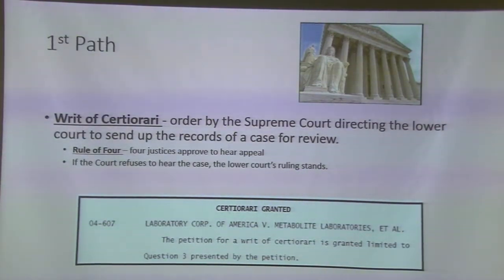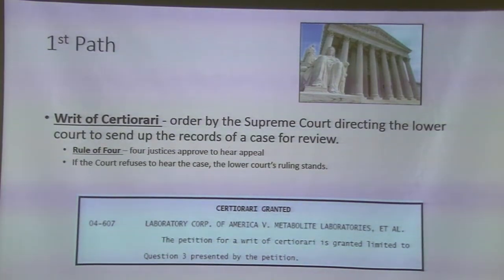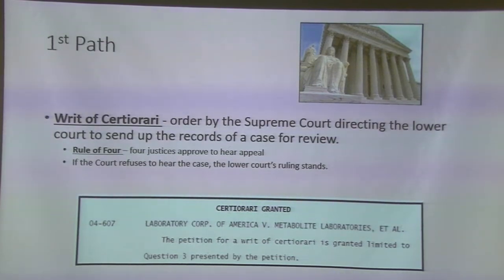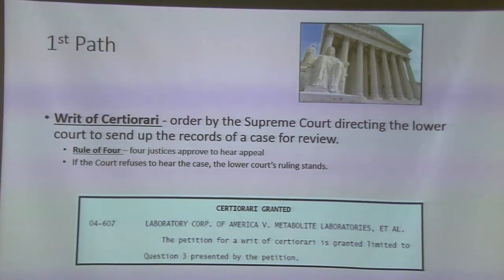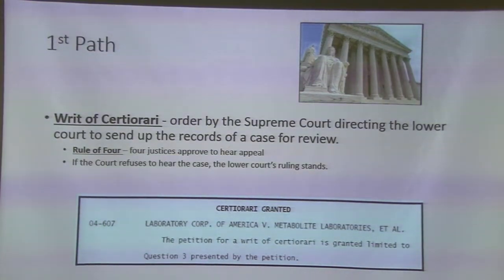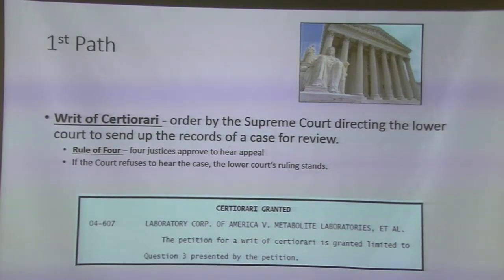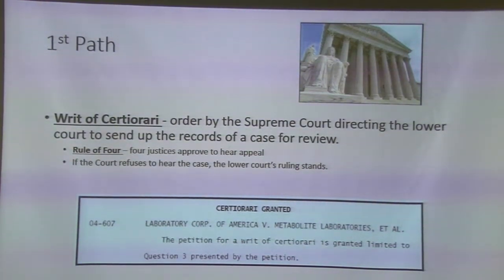For example, if it's a gun rights case, there are certain tests they want to look at. The law clerks find a case they think might be relevant, present it to the justice, and then the justice presents it when all nine justices are together. Key point: if four justices say they want to hear it, the appeal goes forward. If not, the case isn't heard. Most appeals are never heard by the Supreme Court.